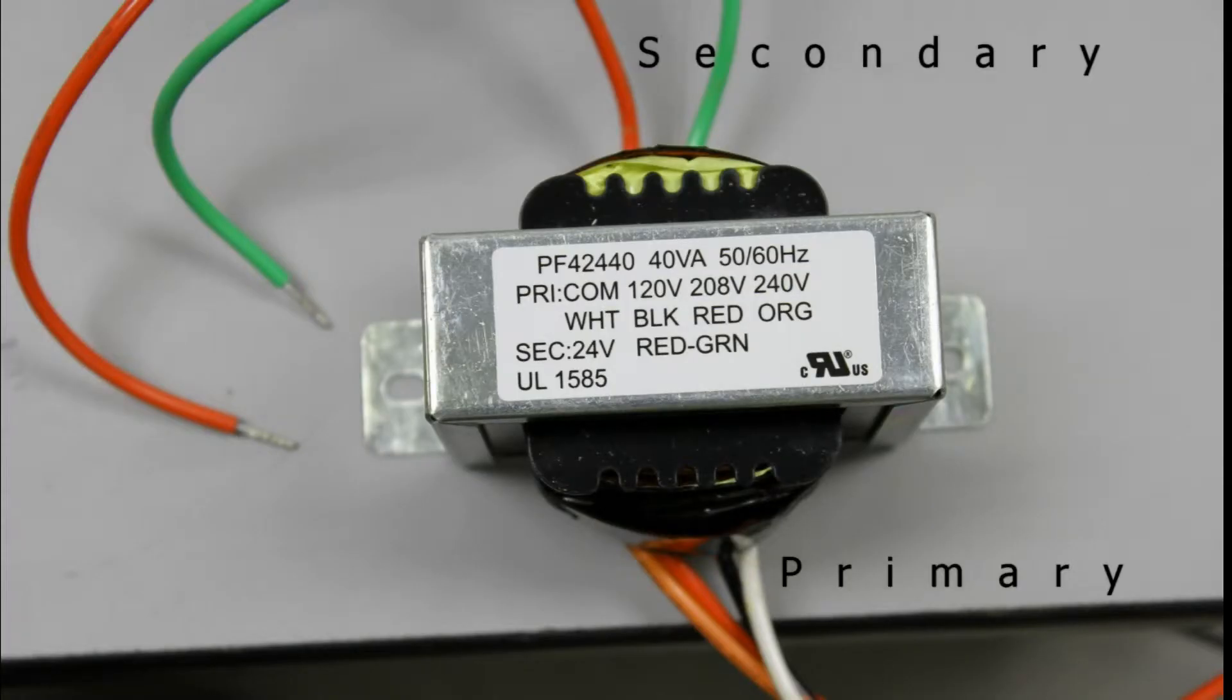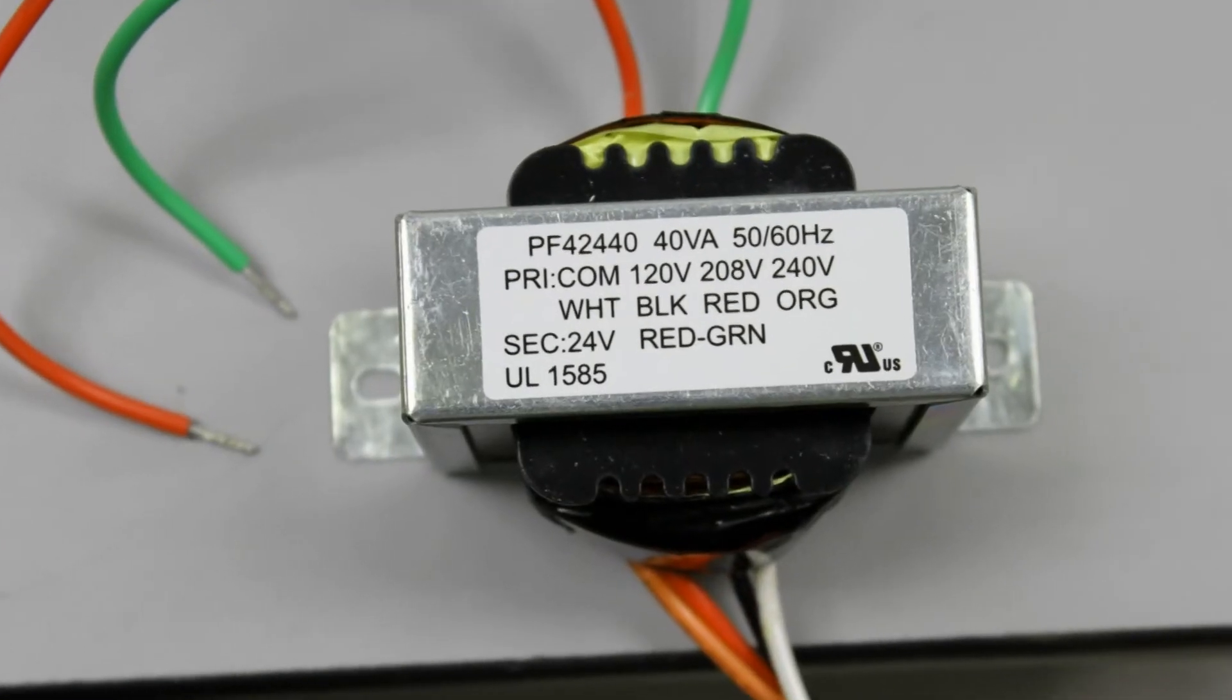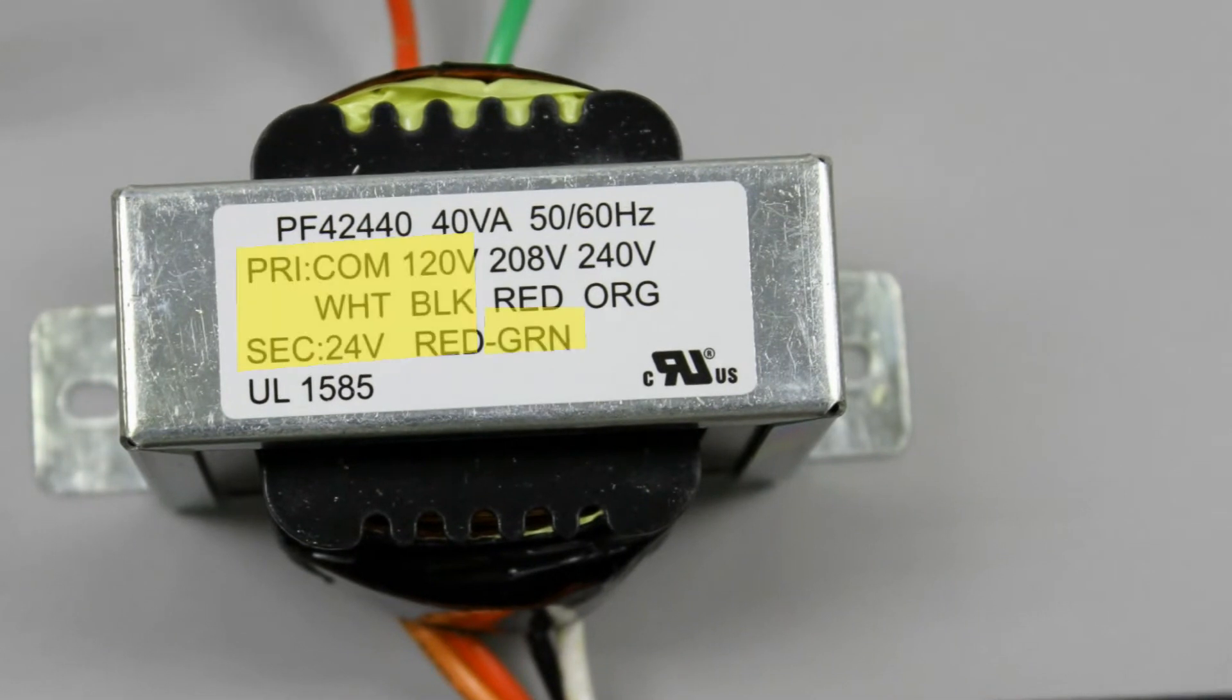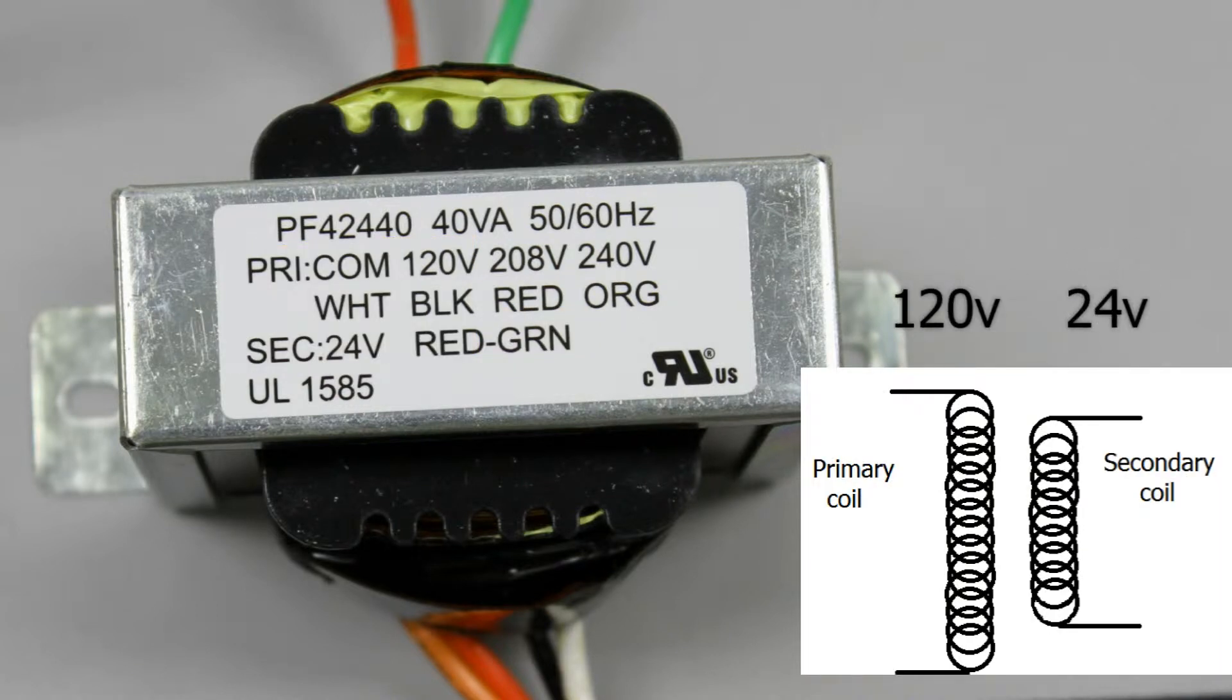Here we see a transformer. Secondary is at the top, primary is on the bottom. Transformers have a label. You'll notice it says 40 VA. Transformers are rated by the secondary volt amps, or power. Here you can see the primary and the secondary voltages. When we use the white and black on the primary, that's for 120 volts, and we'll get 24 volts out. That's a 5 to 1 ratio.